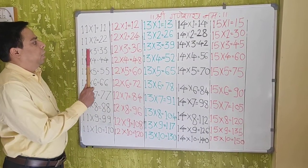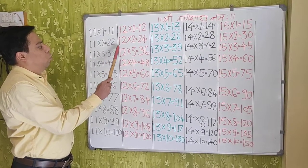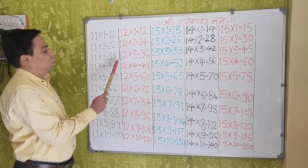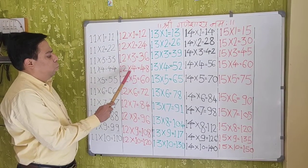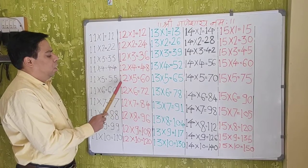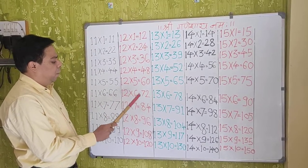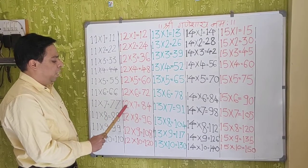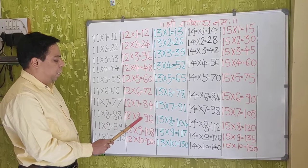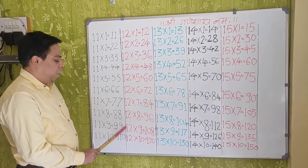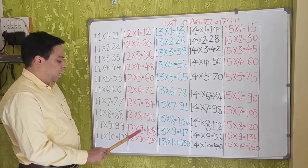Next table: 12×1=12, 12×2=24, 12×3=36, 12×4=48, 12×5=60, 12×6=72, 12×7=84, 12×8=96, 12×9=108, 12×10=120.